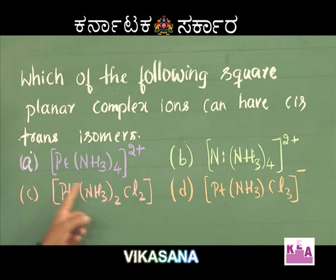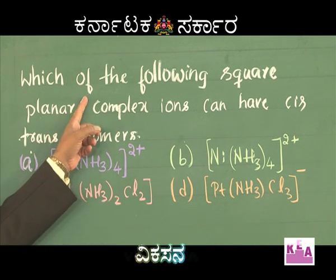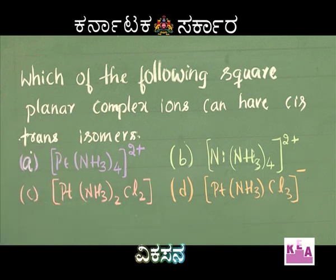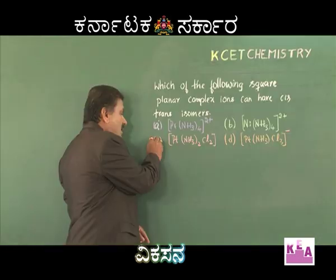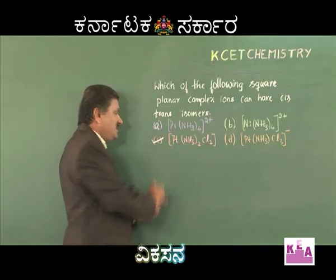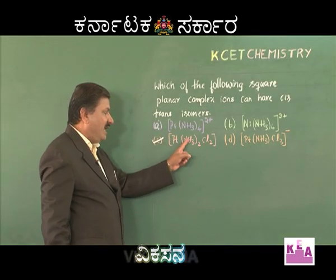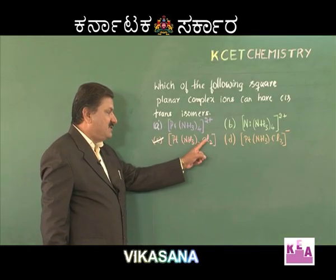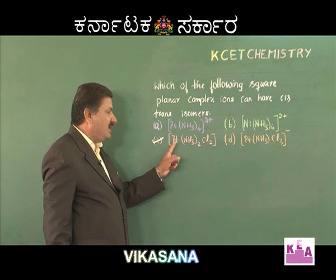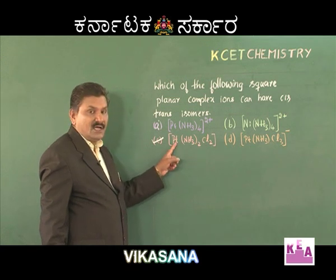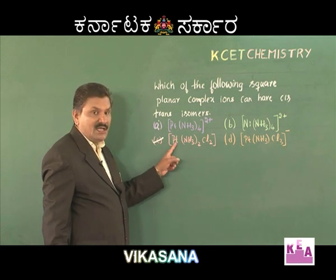Therefore, option C is the correct answer for this question. Option C, Pt(NH₃)₂Cl₂, is the complex that can exhibit geometrical isomerism.